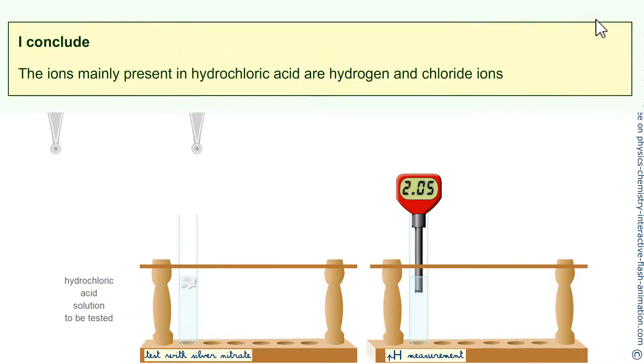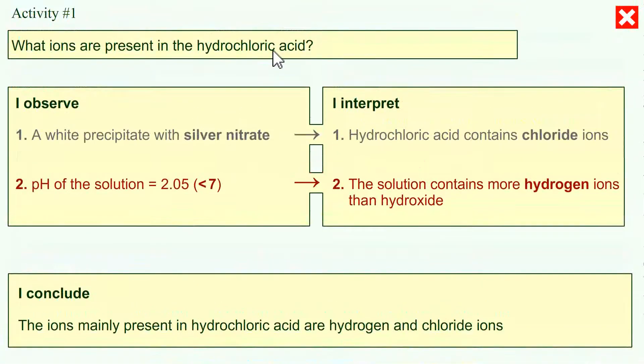First information from this activity: what are the ions present in hydrochloric acid? I observe a white precipitate with silver nitrate, so hydrochloric acid contains chloride ions. The pH is 2.05, much lower than 7. This means the solution contains many more hydrogen ions than hydroxide ions.